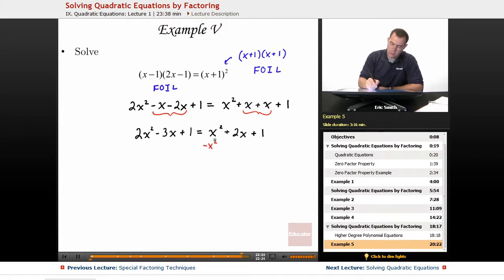I'm going to subtract an x squared from both sides. That will combine those ones. We'll subtract a 2x, and we'll subtract a 1. This will give us x² - 5x = 0.